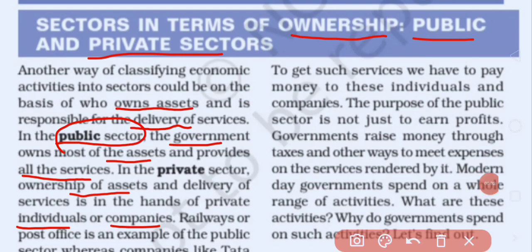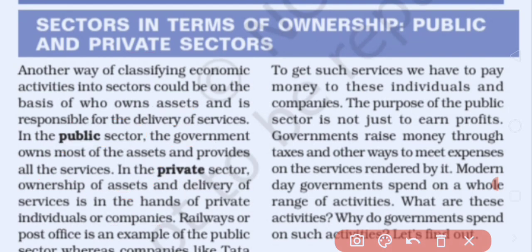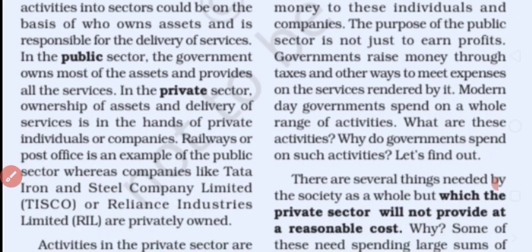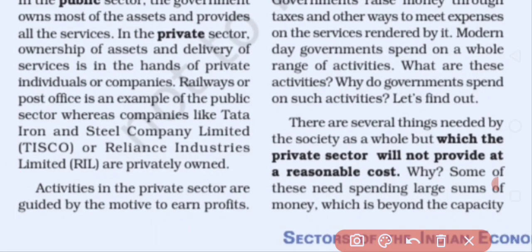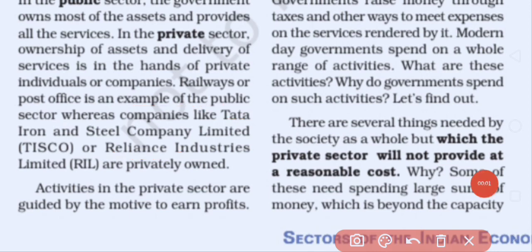If individuals and companies own all the assets and deliver the services, that is the private sector. On this basis we can divide both sectors: who owns the goods and services, and who is delivering them. The examples are also different — Railways and the Post Office are examples of the public sector, while Tata Iron and Steel Company and Reliance Industries are private sector companies.